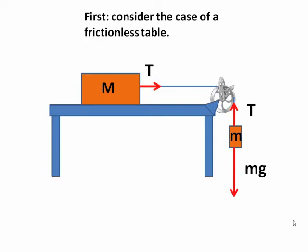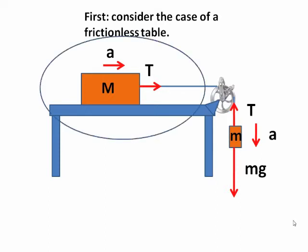So, what we need to do is isolate each system and find the F equals ma equations. They will accelerate. Both masses will accelerate at exactly the same rate. They're connected by the string. So, let's isolate the mass on the table.